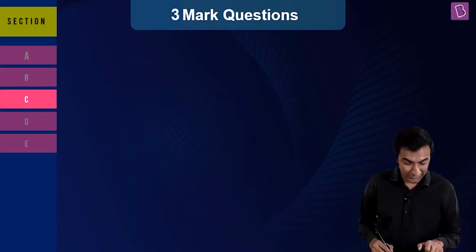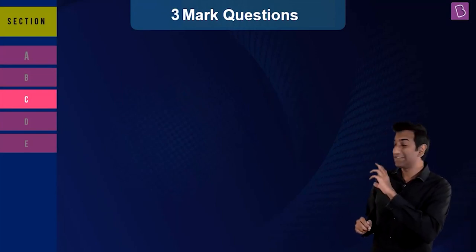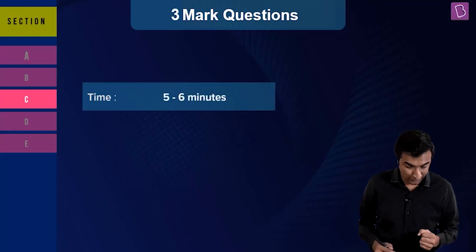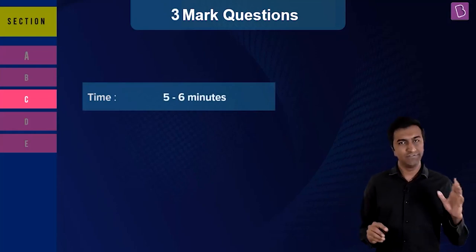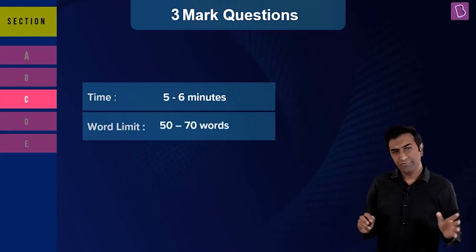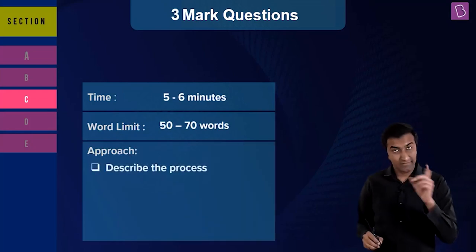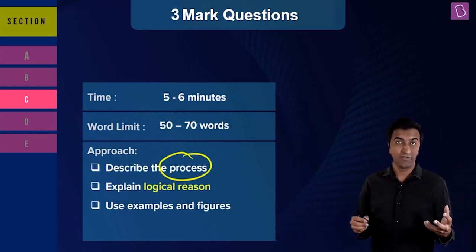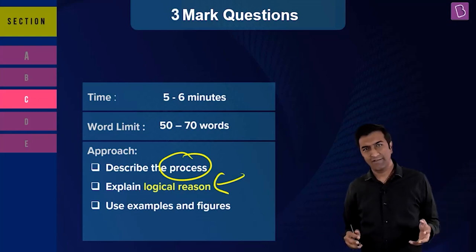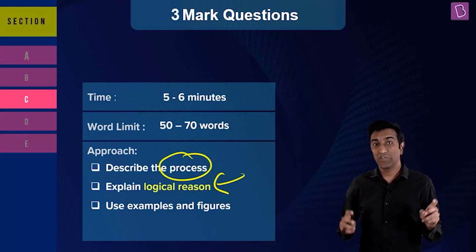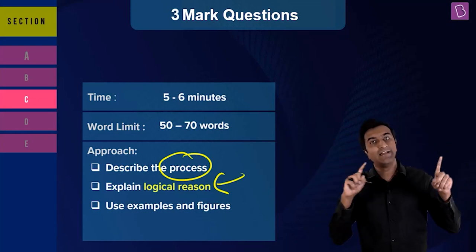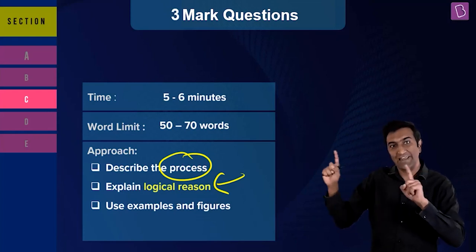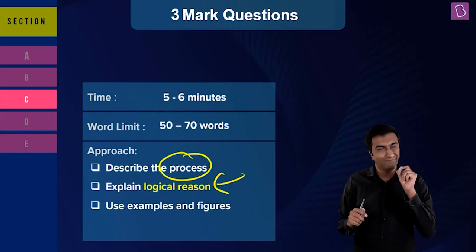On to the next section — three-mark questions. We're just going through them one by one in detail. We suggest you take about five to six minutes on these questions. The word limit is about 50 to 70 words. Now these questions are slightly longer, so you need to describe the process. If there is some logical reasoning behind things, do that. You can draw a sort of a map in your mind to connect theoretical ideas and make a story. Use figures and examples as much as possible.